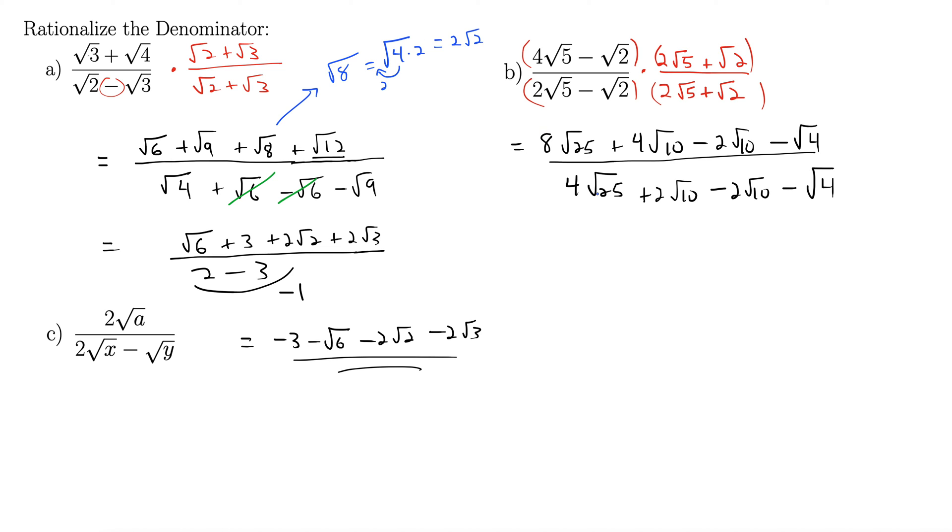The best part of this is this cancellation right here. That is so wonderful that that happens. That solves all our problems with the radicals in the denominator. It introduces a lot of new problems for the numerator, but it does help out the denominator. Let's see here. Rad 25 is 5. 8 times 5 is 40. So 40, we can combine these two. 4 rad 10 minus 2 rad 10 is plus 2 rad 10. And then minus rad 4 is minus 2.